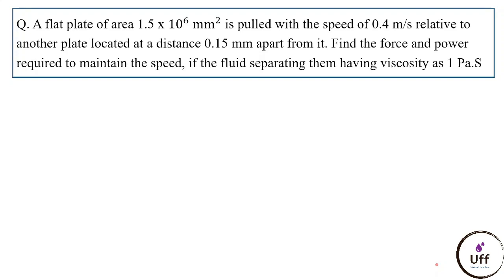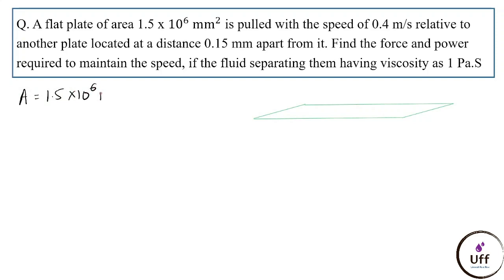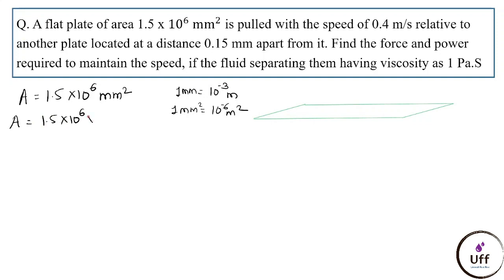Consider this flat plate with area 1.5 × 10⁶ mm². Let's convert this to meter square. We know that 1 mm = 10⁻³ m, so 1 mm² = 10⁻⁶ m². Substituting: area = 1.5 × 10⁶ × 10⁻⁶ m² = 1.5 m².